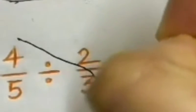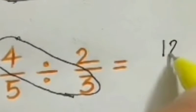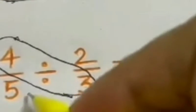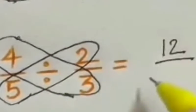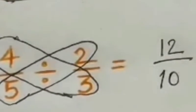Four times three equals twelve. Then five times two equals ten. So twelve to the fraction of ten yung answer niya.